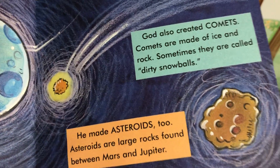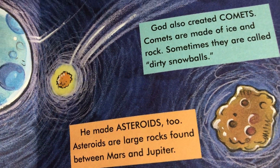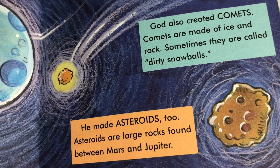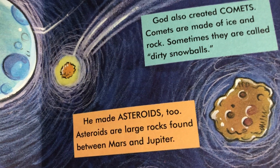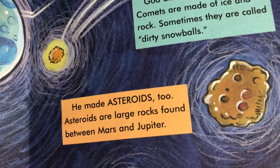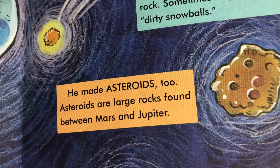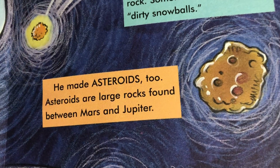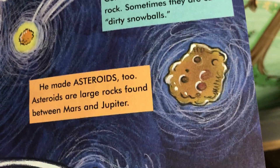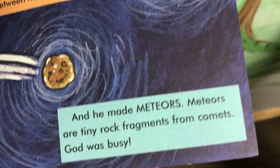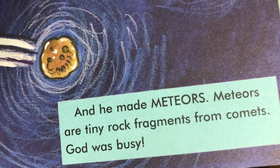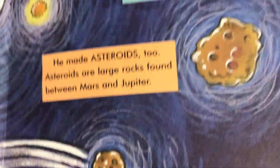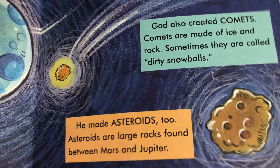God also created comets — comets are made of ice and rock, and sometimes they are called dirty snowballs. He made asteroids too — large rocks found between Jupiter and Mars. And he made meteors — tiny rock fragments from comets. God was busy!